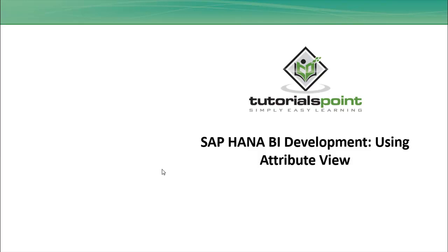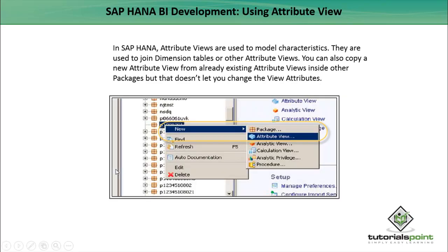Hello friends, welcome to Tutorials Point. In this tutorial we will see how we can use the attribute views in SAP HANA. Attribute views are used to model the characteristics; they are used to join the dimension tables or other attribute views.